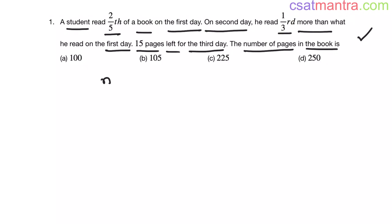Say number of pages in the book is n my friends. We don't know that. That's why we have assumed it. This is the mistake most of the aspirants make my friends. They don't assume the things which are not known. If you don't assume, then how can you form the equations and solve the problem?